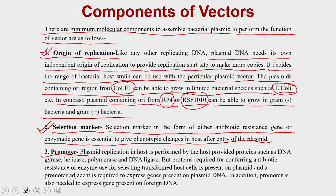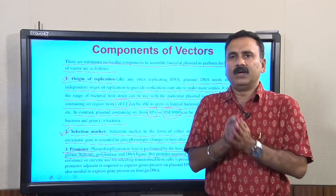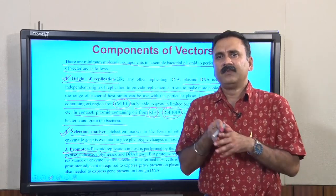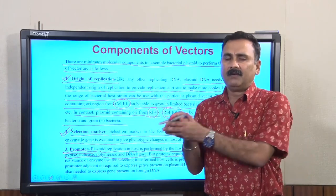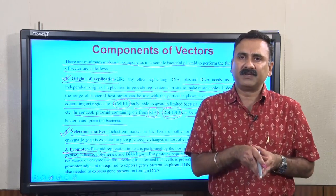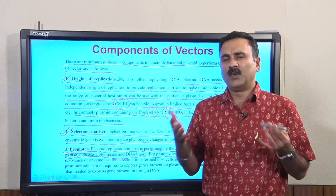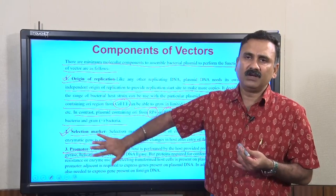The third component is the promoter. Every vector designed for overexpression should have a promoter, which allows transcription and translation of the particular gene. The promoter is included in vectors used for overexpression of a protein or recombinant DNA, but can be excluded if you are simply designing a vector for cloning purposes — that is, if you are just using the vector to carry the foreign DNA from one host to another without intending to overexpress that particular foreign gene.